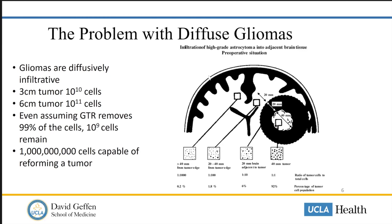The average number of cells in a three-centimeter tumor is 10 to the 10th; six centimeters, 10 to the 11th. Even if we gross totally resect that contrast-enhancing lesion and remove 99% of the cells, we still leave over a billion cells, each capable of reforming a tumor. These cells spread beyond the boundaries of conventional surgical resection, as shown by pathology studies and autopsy specimens sampled at different distances from the tumor — even well beyond the MRI margin, there's high infiltration of malignant cells.